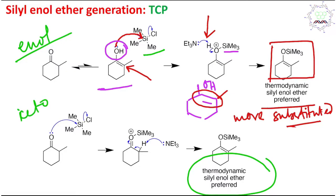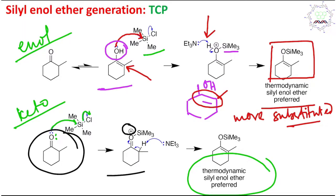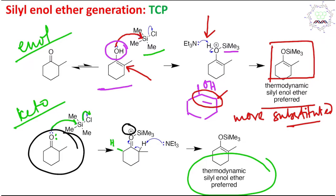The second mechanism is the keto-mediated mechanism. The lone pair of oxygen from the keto form can react with the silicon center, and the chlorine leaves via an addition–elimination mechanism. After nucleophilic attack, the oxygen carries a formal positive charge; this protonated species is far more electron-deficient, making the alpha proton more acidic. Because the base is weak and reaction occurs slowly, this is an equilibration process, and the thermodynamically controlled product — the more stable product — is preferred.